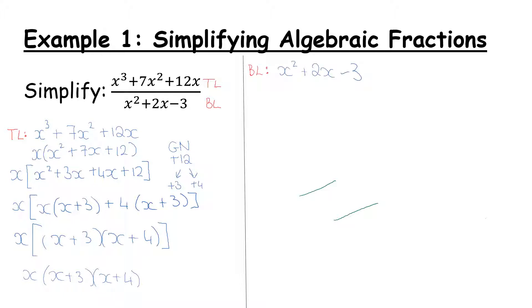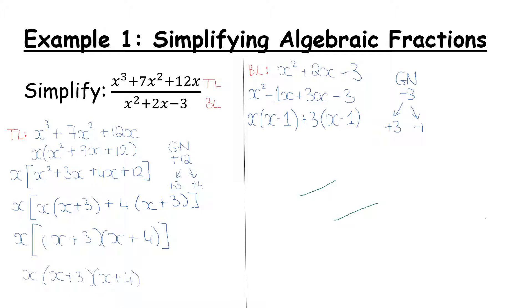Moving on to the bottom line: we have a straightforward quadratic — x squared, an x, and a number. Our guide number here is minus 3. To factorize it to give us plus 2, we're going to use plus 3 and minus 1. So we rewrite plus 2x as minus 1x plus 3x. In the first two terms, x squared minus 1x, there's an x common leaving x minus 1. In the second group, there's a 3 common, leaving x minus 1. The check: are both brackets the same? Yes. So we take that out, x minus 1, leaving us with x plus 3.